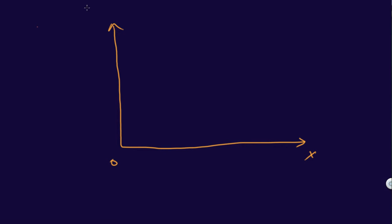Let's understand this graphically. On the graph, the X-axis represents quantity and the Y-axis represents price. The price of the commodity remains the same — there is no change in price. What is changing the quantity demanded are your taste and preferences.